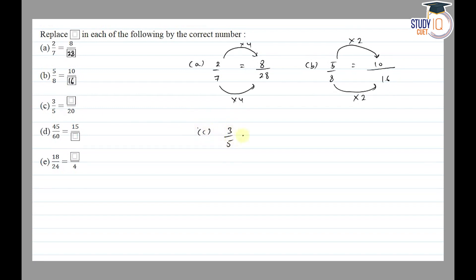Part C: 3/5 = ☐/20. Here we need to find the numerator. We look at the denominator relationship: 5 × 4 = 20. To get an equivalent fraction, we multiply the numerator by the same number: 3 × 4 = 12. So the answer is 12.